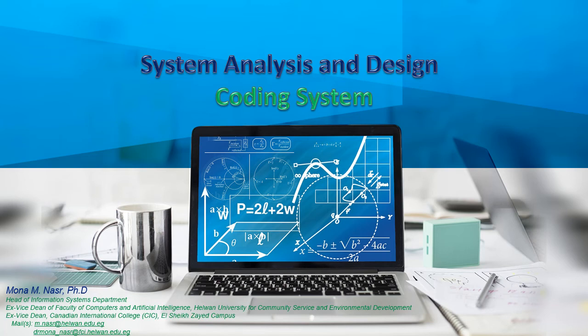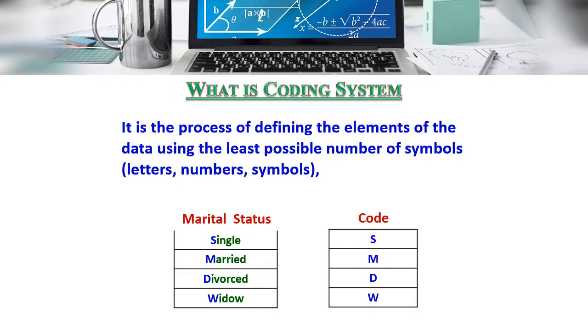A coding system is the process of defining the elements of data using the least possible number of symbols, such as letters, numbers, and symbols. For example, marital status — single, married, divorced, widow — can be coded as SMDW.